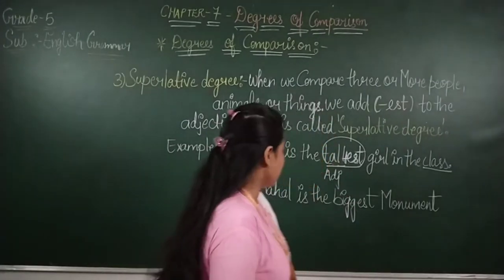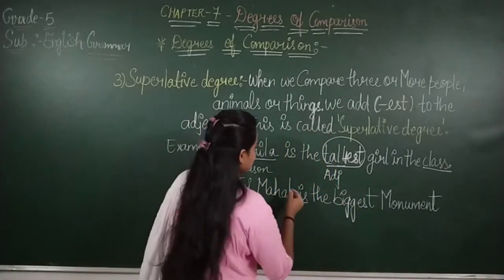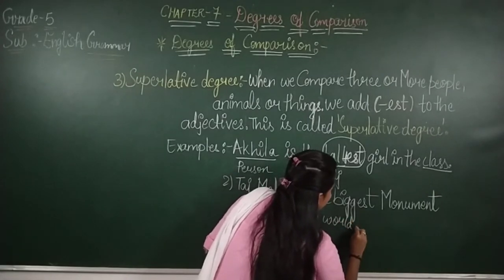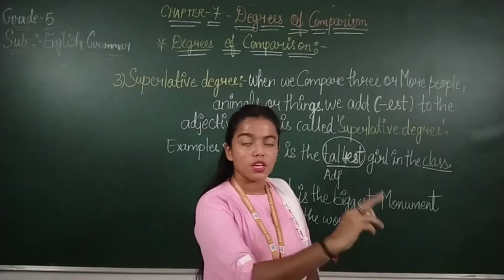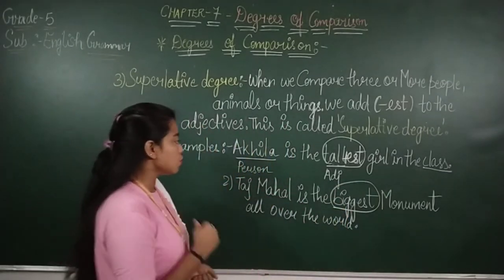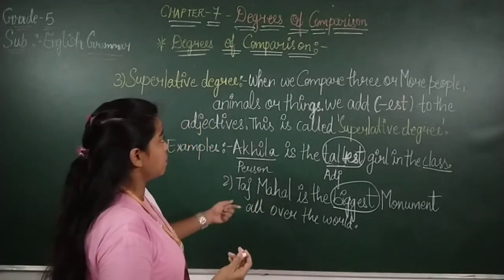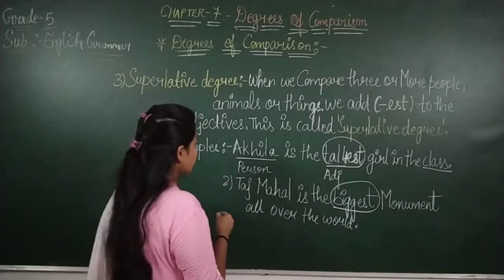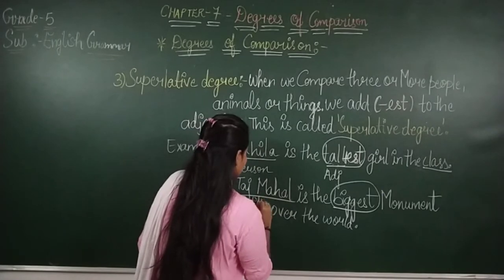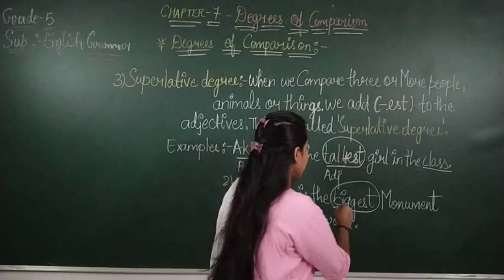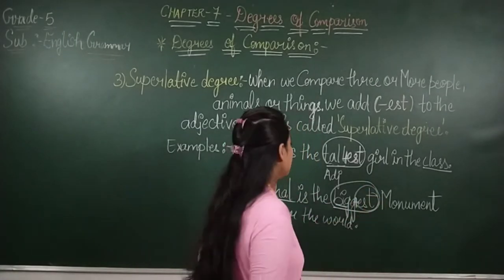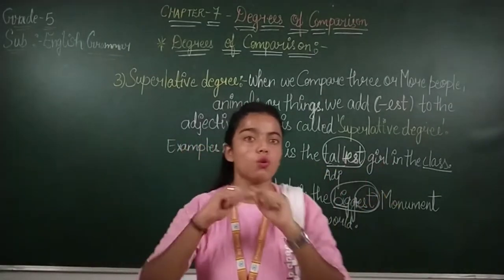Second example: Taj Mahal is the biggest monument all over the world. Here we are comparing with the world — Taj Mahal is the biggest monument. It is a place. We can tell about people, animals, things, and places. 'Big' is the adjective, and we added -est to it, making 'biggest.' So Taj Mahal is the biggest monument all over the world.